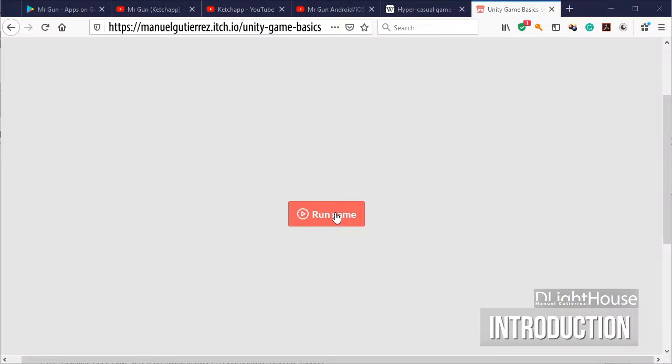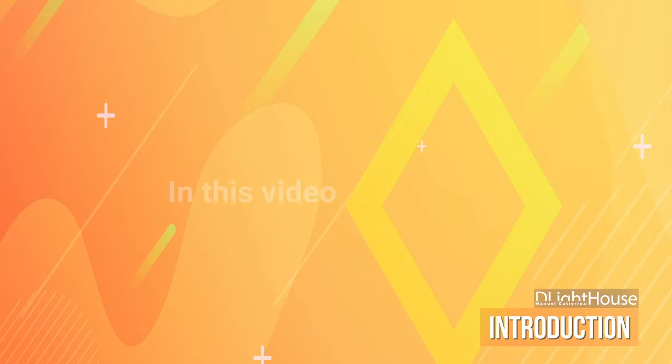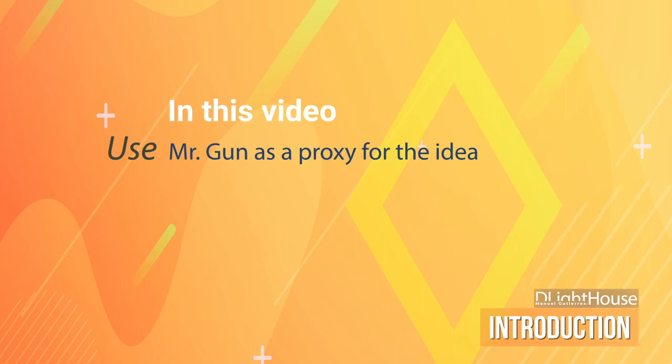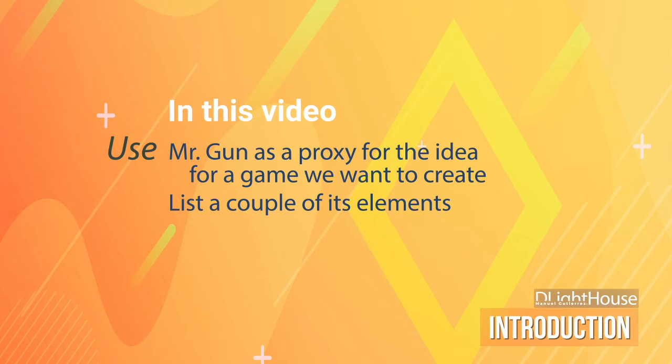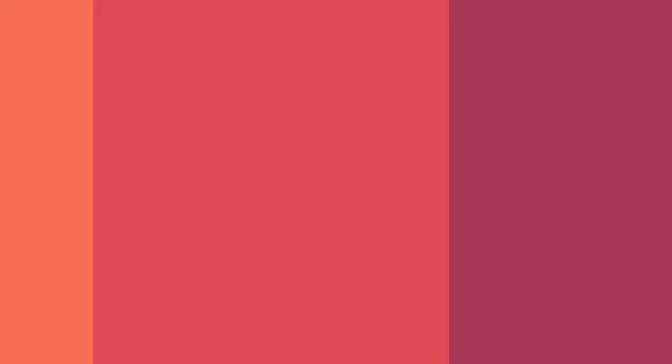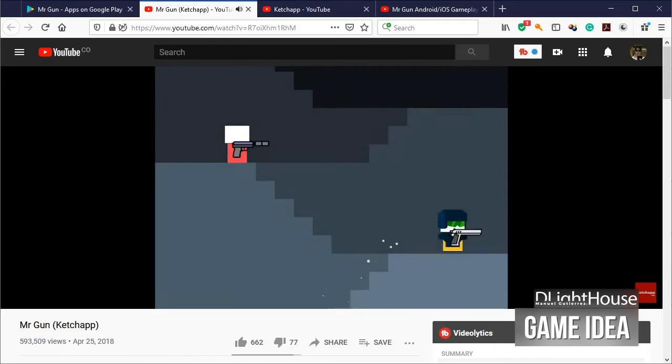You can check the game that we are going to implement at each IO. In this video I am going to use the MrGun game as a proxy for a game idea that we might want to create. I'll start by listing a couple of its components or elements, and in future videos I will start implementing those components in Unity. So let's take a look into MrGun and take it apart.